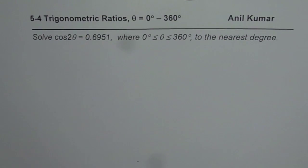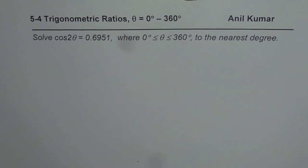I'm Anil Kumar and here is a very interesting question on trigonometric ratios. The question is solve cos 2θ equals 0.6951 where θ is between 0 to 360 degrees to the nearest degree.